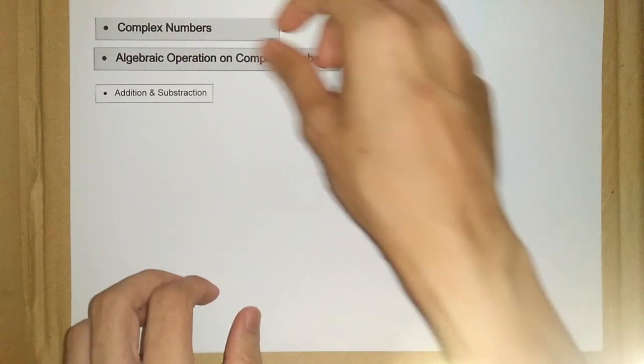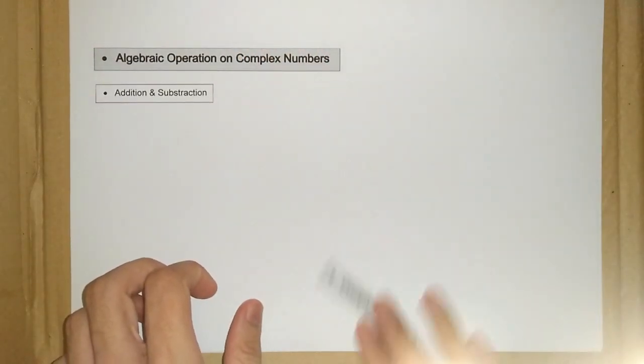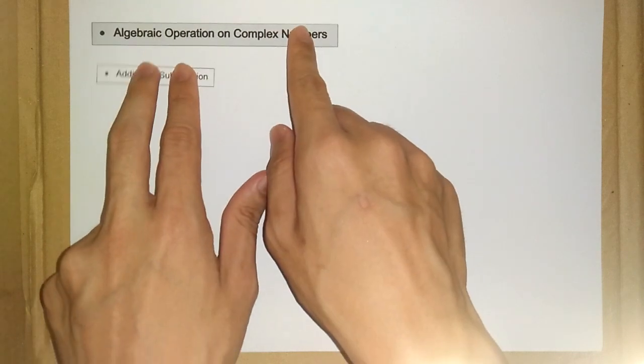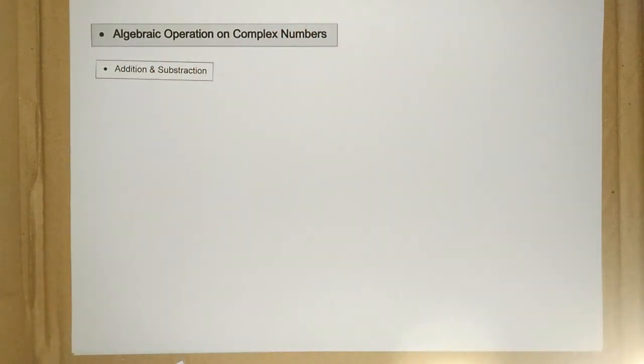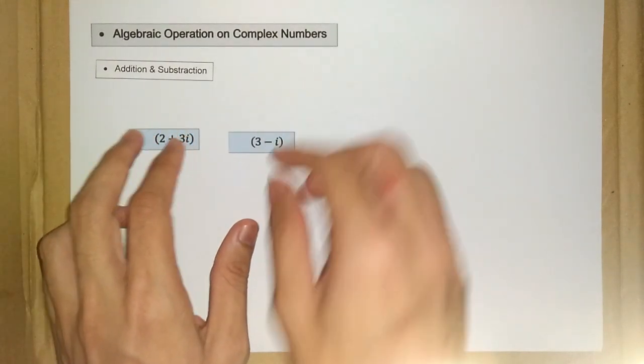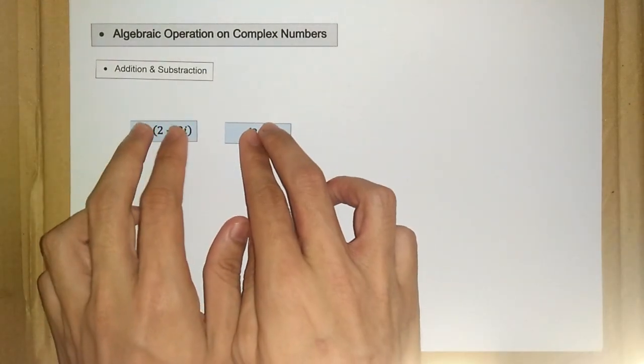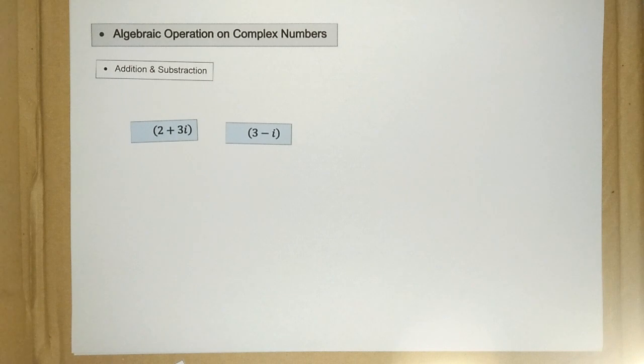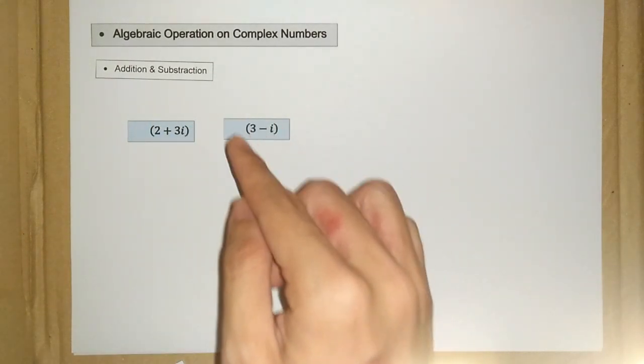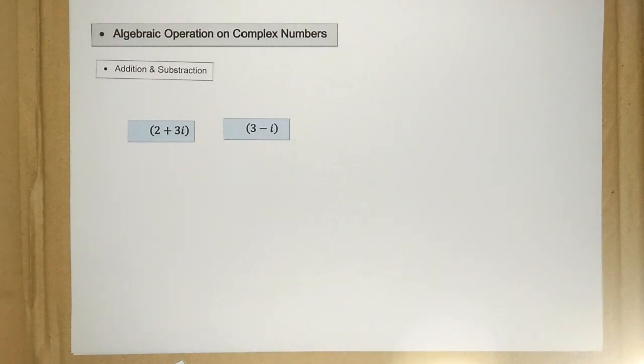And the best way to learn about this is through examples. So let's say we have the first example here. We have two complex numbers: we have 2 plus 3i and the second one, the second complex number is 3 minus 1i.